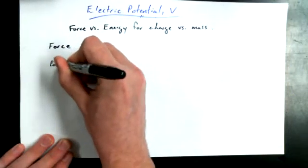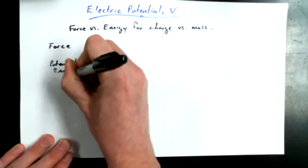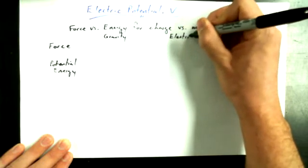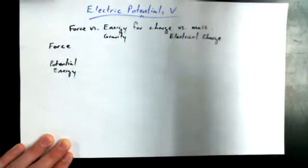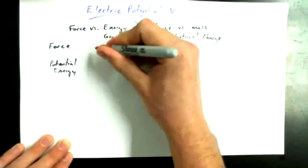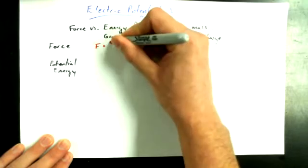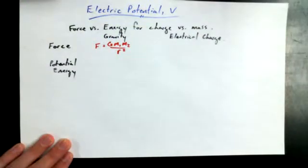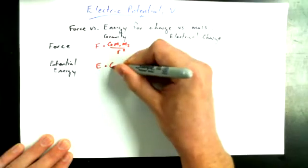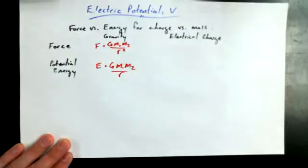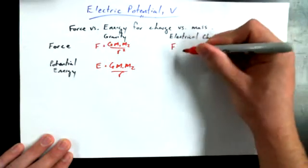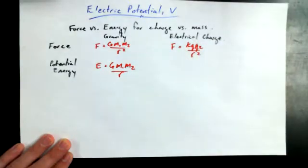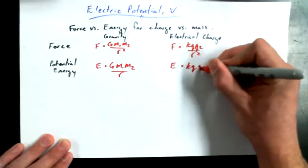So here's the analogy. If we're talking about gravity versus electric charge, we know that for gravity, the force equation, the universal law of gravitation, is F equals G M1 M2 over R squared. And the gravitational potential energy between two massive objects is G M1 M2 over R. Analogously, the force for electrostatics is K Q1 Q2 over R squared. And by the same method of derivation, E is equal to K Q1 Q2 over R.